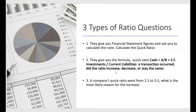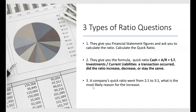For the third type of ratio question, they tell you the ratio increased — say from two to one last year to three to one this year — and ask what is the most likely reason for the increase. They'll provide the formula and present answer choices like: were sales returns not properly recorded, or were consignment shipments recorded as sales? This makes number three the toughest of the three types, and you're more likely to see it on the Audit exam than on FAR or BEC.